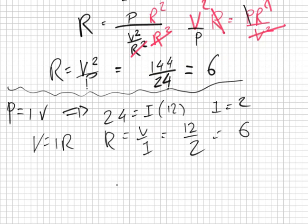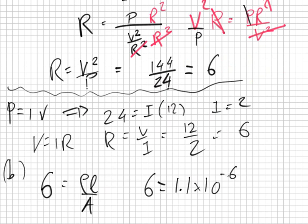So we can say R equals rho L over A. So R resistance equals rho, which is 1.1 times 10 to the minus 6, times L over A, which is pi r squared.